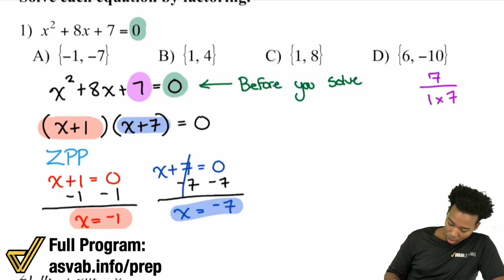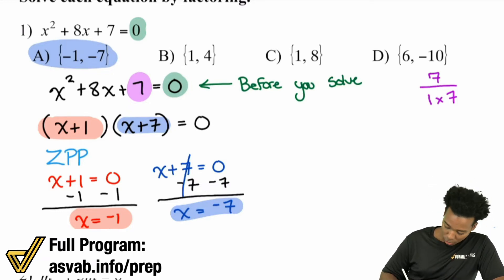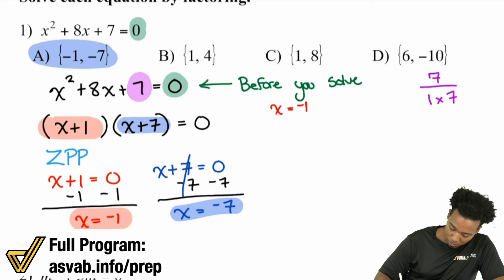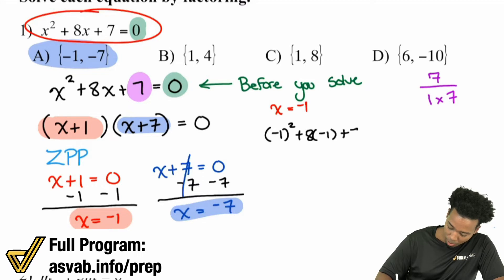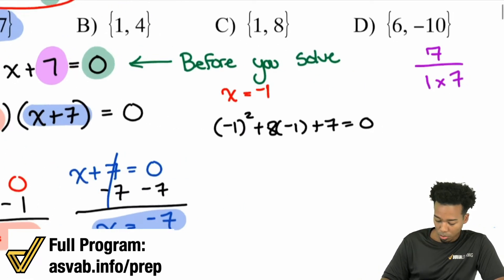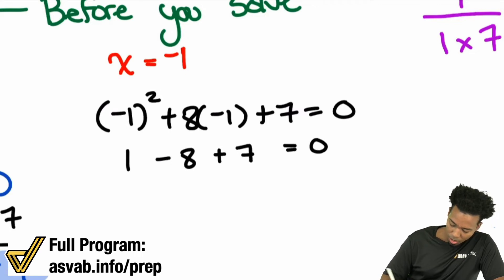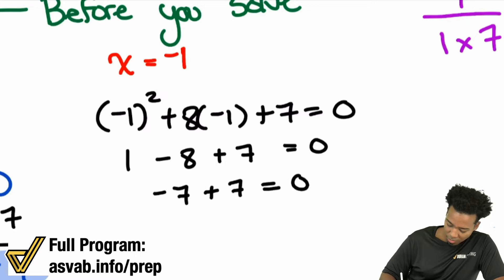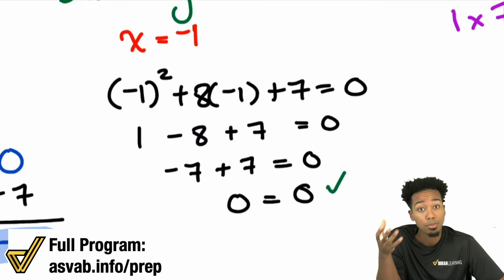That makes our answer A. Now let's check the work by plugging in those values. Plugging in x equals negative 1: negative 1 squared plus 8 times negative 1 plus 7 equals 0. Negative 1 squared is positive 1; 8 times negative 1 is negative 8; then we have the 7. So 1 minus 8 is negative 7, and negative 7 plus 7 is 0. That is correct — it absolutely works.